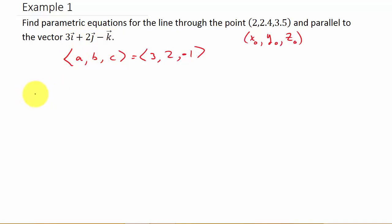Our parametric equations would be: x is equal to x₀ + at. So x equals x₀, which is 2, plus a, in this case is 3, times t. So x = 2 + 3t.